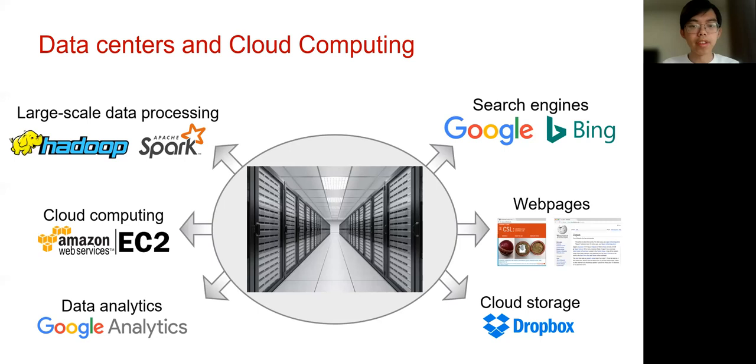This talk is about how should we design algorithms for data centers to enable fast cloud computing. Cloud computing is now an indispensable part in people's lives. Big platforms and companies such as Google, Microsoft, and Amazon are using hundreds of thousands of servers to enable their own applications, like large-scale data processing, search engines, and cloud storage.